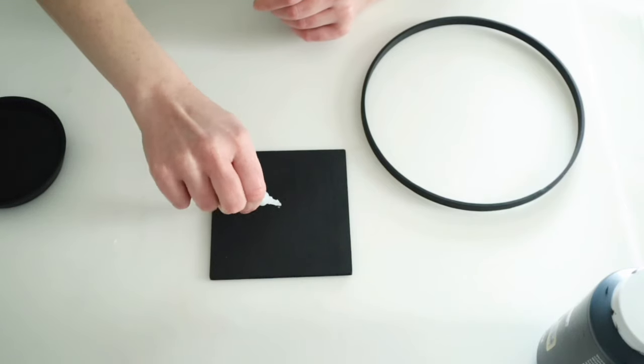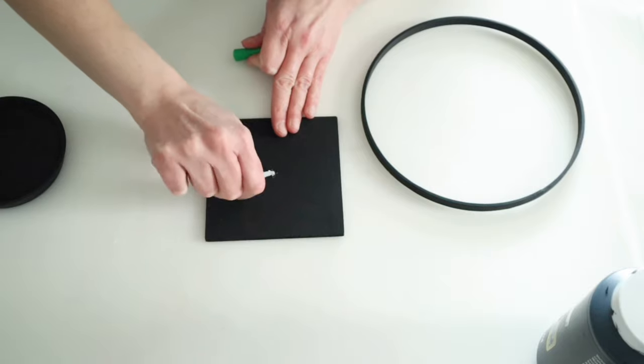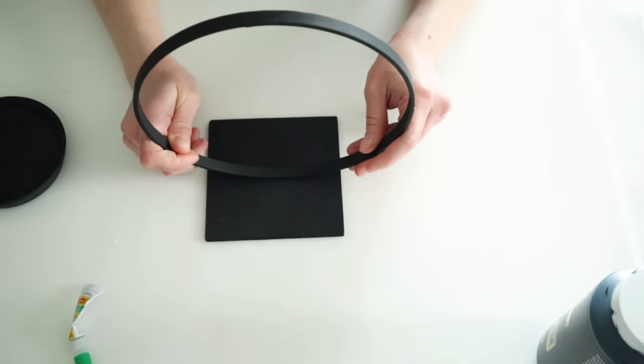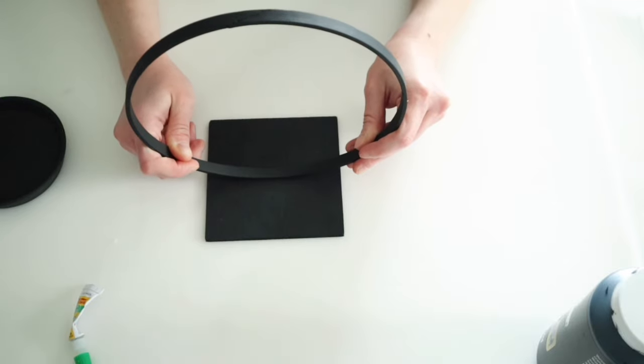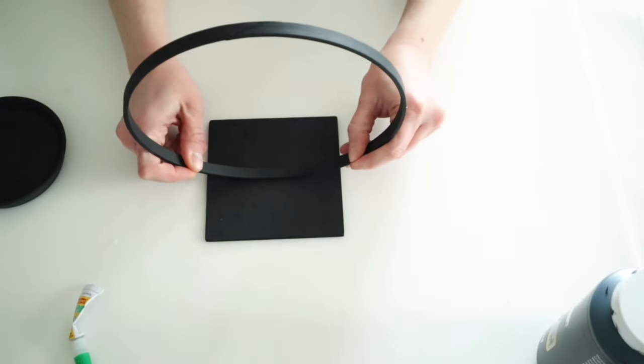Once everything was dry, I'm just going to go ahead and use some of my Dollar Tree gel super glue to start putting this project together. And for this project, I do recommend using something like the gel super glue or some E6000 just to make sure that it stays together.